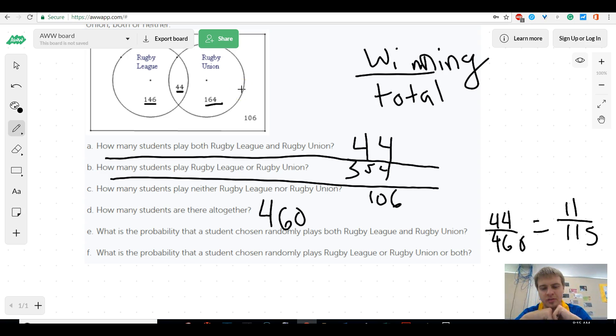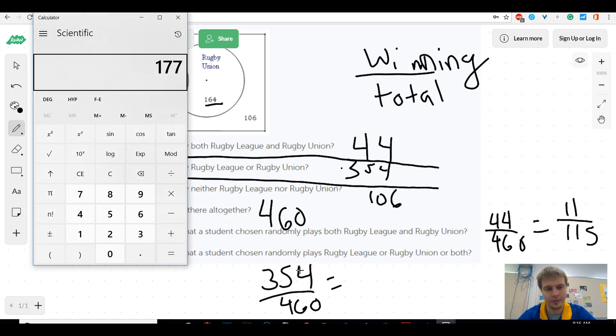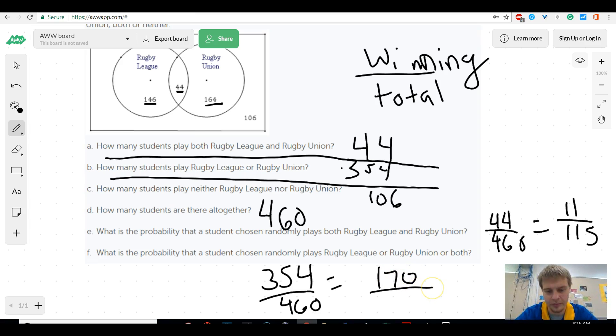And then it says, what is the probability that a student is chosen at random plays for the rugby league or the rugby union or both? So it's just basically asking, what's the probability that it's in any of those circles? Yes, they could have used the or, because that would have worked, rugby league or rugby union. But they decided to say a whole bunch of stuff. So that would be everything in that circle there. So we found everything in the circle to be 354 over 460. That definitely would reduce. So it divides by 2, and the other one doesn't divide by anything else.